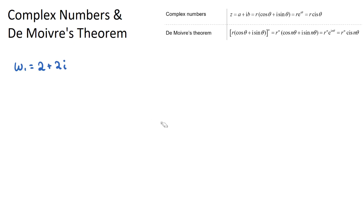We can see an i in our number here. We can view this as: there's a real component of 2 and an imaginary component of 2, so it's 2 plus 2i, where the first number is the real and the second is the imaginary component. We can write complex numbers in a few different formats.